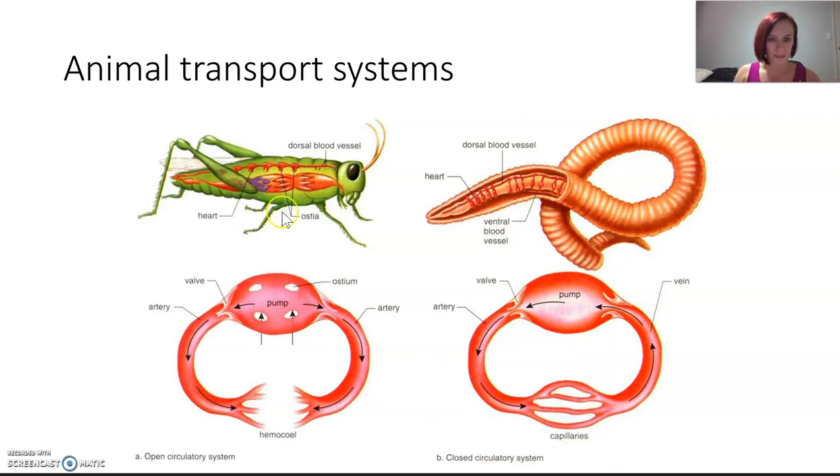There are also open systems, and the grasshopper is an example of that. This is an open system, meaning there's some vessels but not a lot. The blood is not quite blood as we know it. It's called hemolymph, and it's mainly water. What happens is it moves away from the pump, and it just kind of perfuses into the surrounding tissue. It's not in the same way that it keeps circulating like in our system.